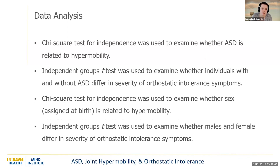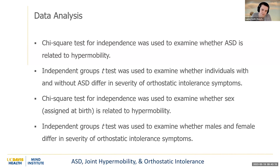For the data analysis, I used four different tests to assess the relationship between the variables. I first used a chi-square test for independence to examine whether autism is related to hypermobility. I then used an independent groups t-test to examine whether individuals with and without autism differ in the severity of their orthostatic intolerance symptoms. A second chi-square test examined whether sex assigned at birth is related to hypermobility, and a final t-test examined whether males and females differ in severity of orthostatic intolerance symptoms.